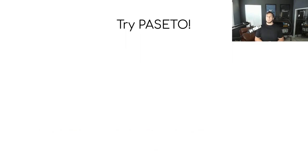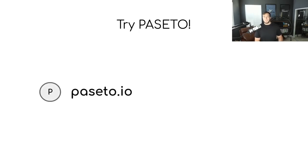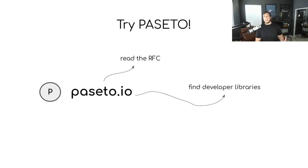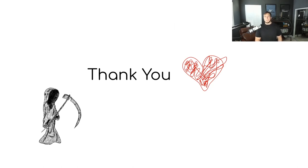My call to action for all of you watching this video: go and give PASETO a try. If you go to the official website at paseto.io, you'll be able to read the RFC and learn more about the specification. You'll also find all the great developer libraries — at this point there are 16 developer libraries across a number of different programming languages. You can also find articles, videos, and all sorts of other resources there. PASETO is an open standard being actively developed, so go get involved if you're interested.